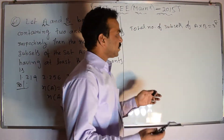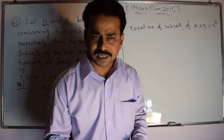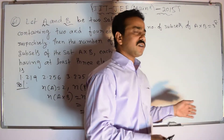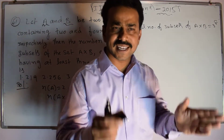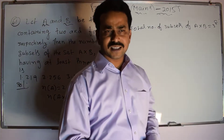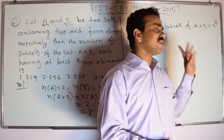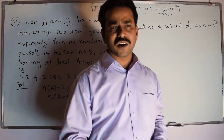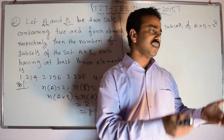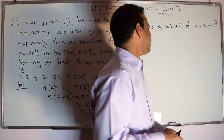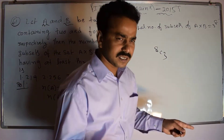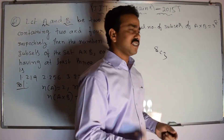We want to calculate the total number of subsets which contain at least 3 elements. First, we focus on subsets which contain exactly 3 elements. There are 8 elements total, and we require only 3. The number of ways to choose is 8C3. Using the combinations concept, 8C3 gives the total number of subsets containing exactly 3 elements.